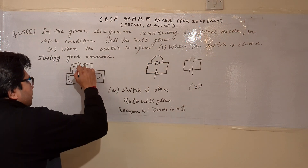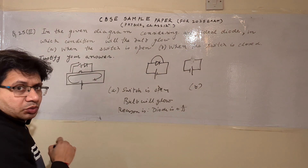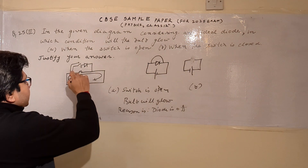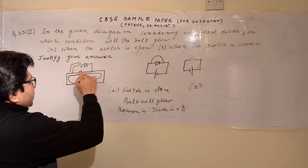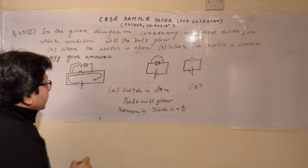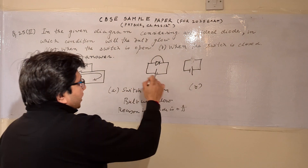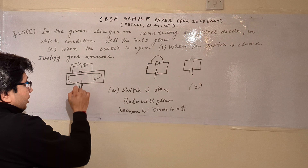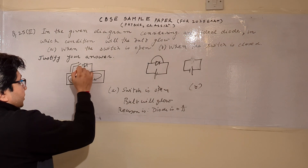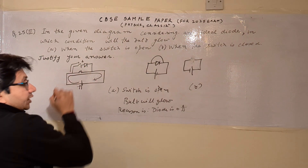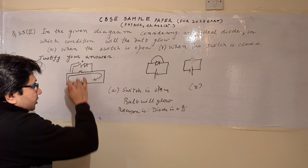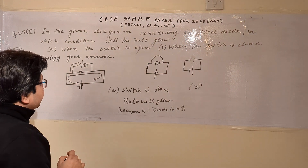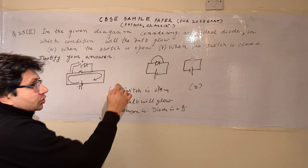In part B, when the switch is closed, there are two parallel paths: the first path has the diode and the second path has the bulb. As the positive terminal is connected to the anode side of the diode, the diode is in forward bias.